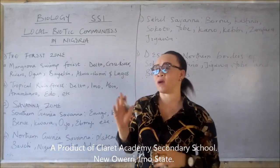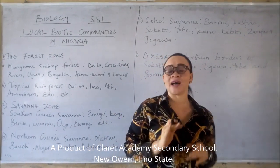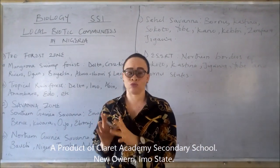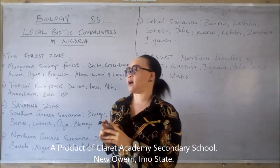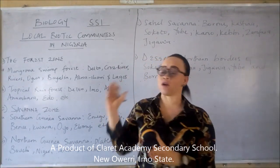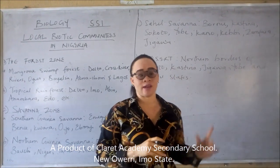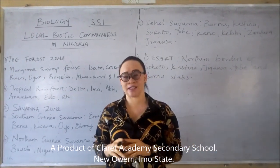Now in Nigeria, the local biotic communities are divided into two main zones. We have the forest zone and the savannah zone. Then we also have the desert region.